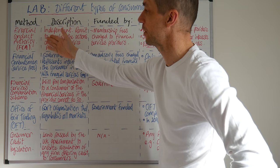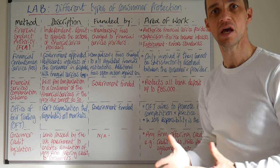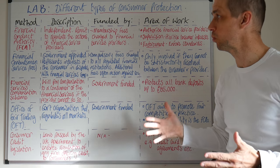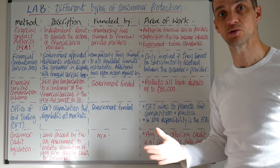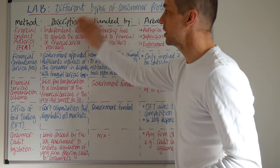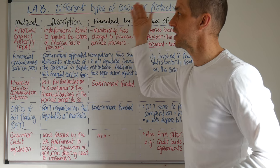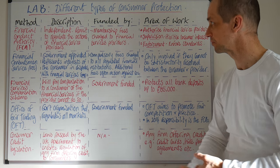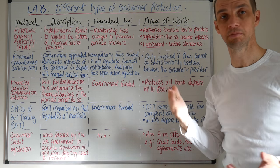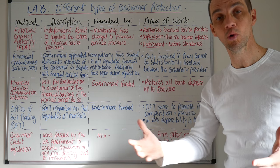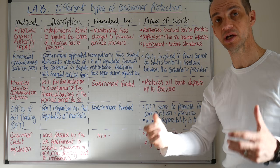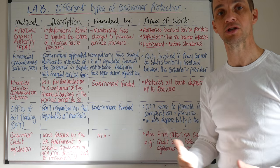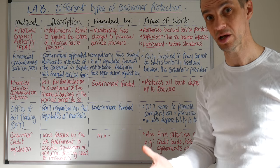Let's take a look firstly at the Financial Conduct Authority. This really is the one that has the overriding responsibility for what is taking place in the financial services industry. It's independent as an organisation, its remit is to regulate the actions of financial service providers. It charges membership fees to all financial service providers and they all need to sign up to abiding by the Financial Conduct Authority to actually operate.